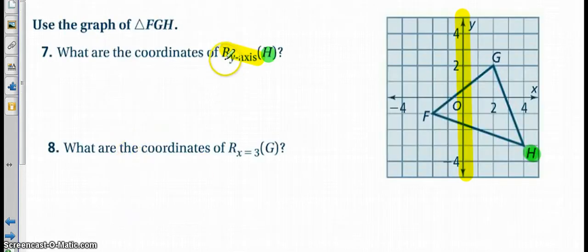So now look at number seven here. We want to perform a reflection across the Y axis for point H. So I've got the Y axis here highlighted at point H. So all we need to do is make this line, this axis, the perpendicular bisector between H and H prime. So go ahead, pause and try, and then go ahead and try eight on your own as well.